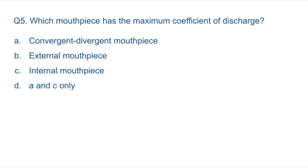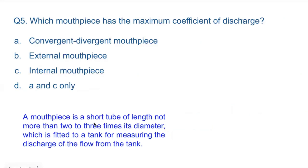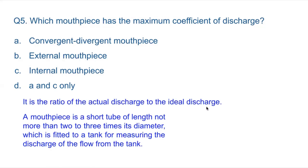Question 5: Which mouthpiece has the maximum coefficient of discharge? A mouthpiece is a short tube of length not more than two to three times its diameter, fitted to a tank for measuring the discharge of flow from the tank. The coefficient of discharge is the ratio of actual discharge to the ideal discharge. This is a question from fluid mechanics — questions that have been asked in the Delhi State Pollution Control Committee.